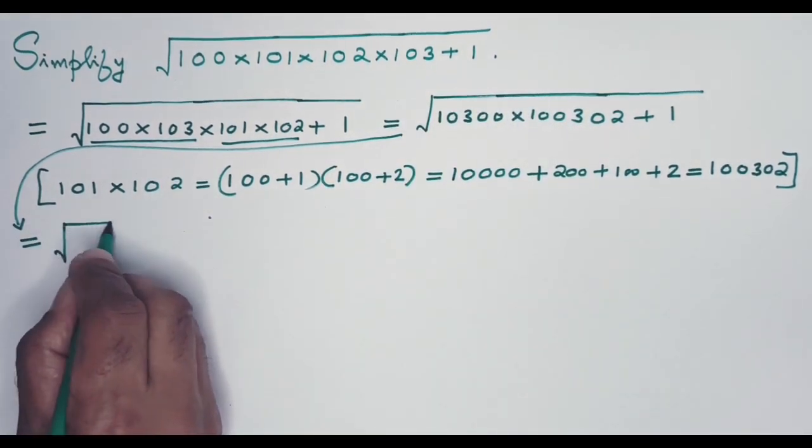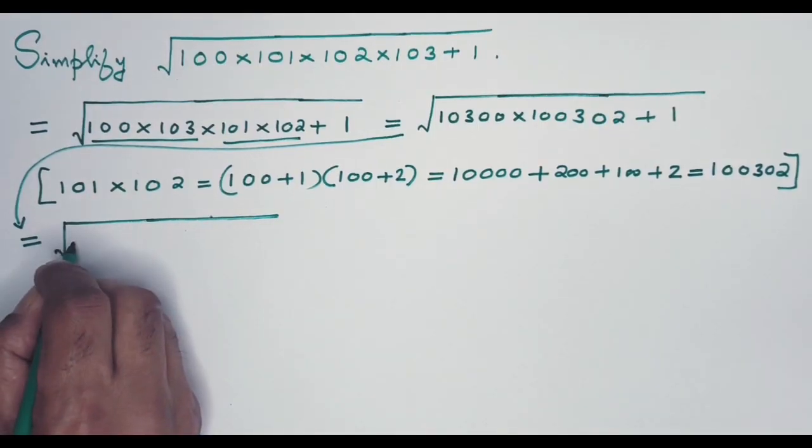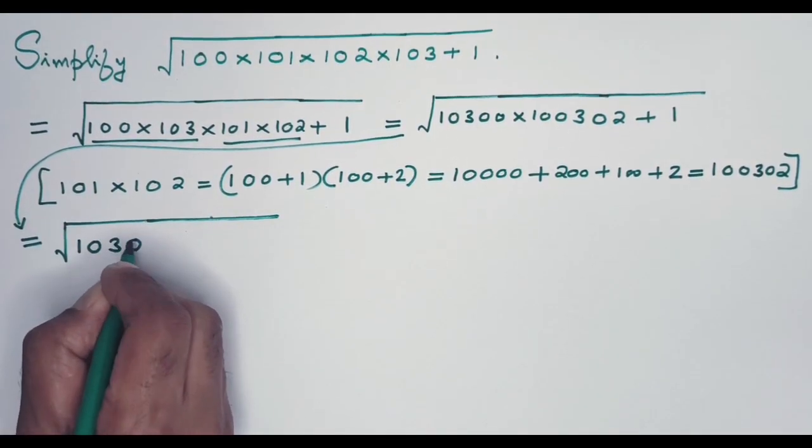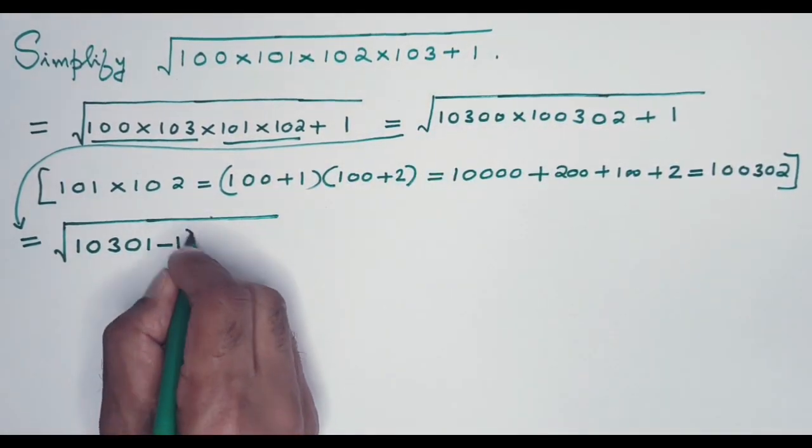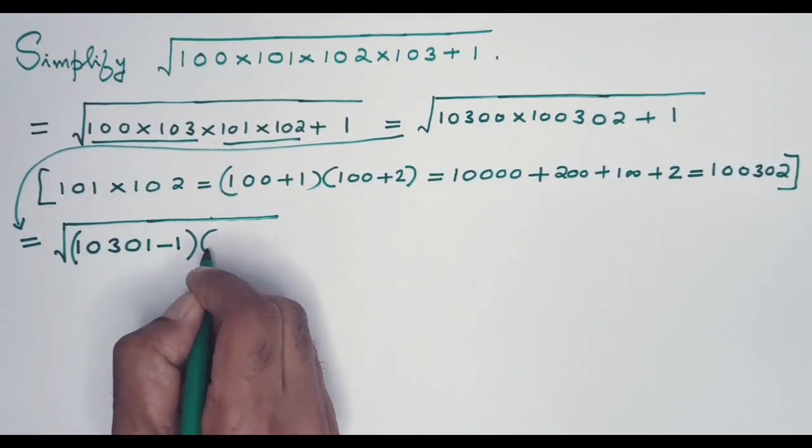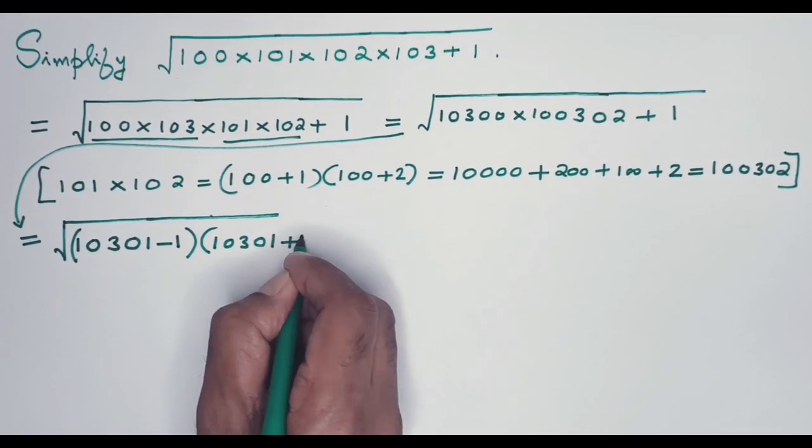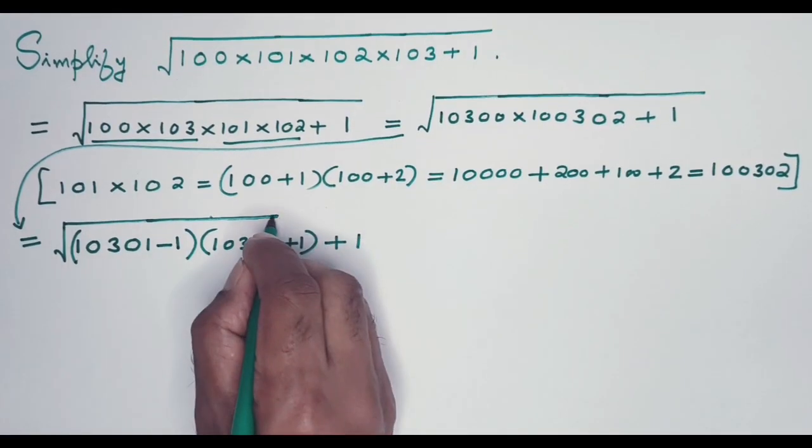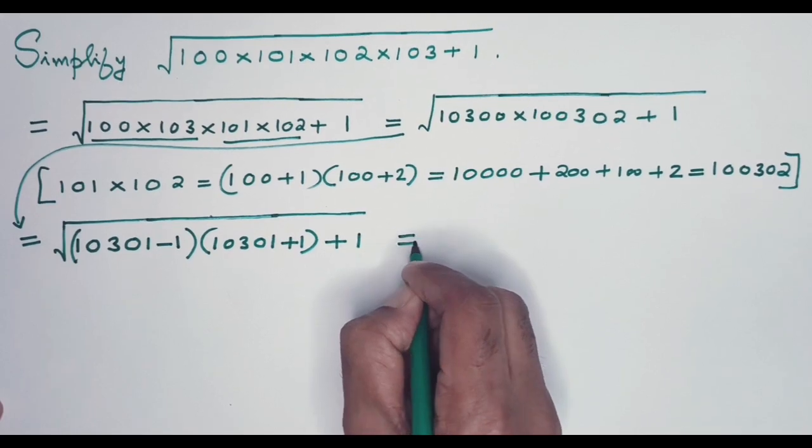The first number 10,300, I will write like this: 10,301 minus 1. That will be this term. Put a bracket. Then this term I will write as 10,301 plus 1. Then comes the other term which is 1. Now this equals...